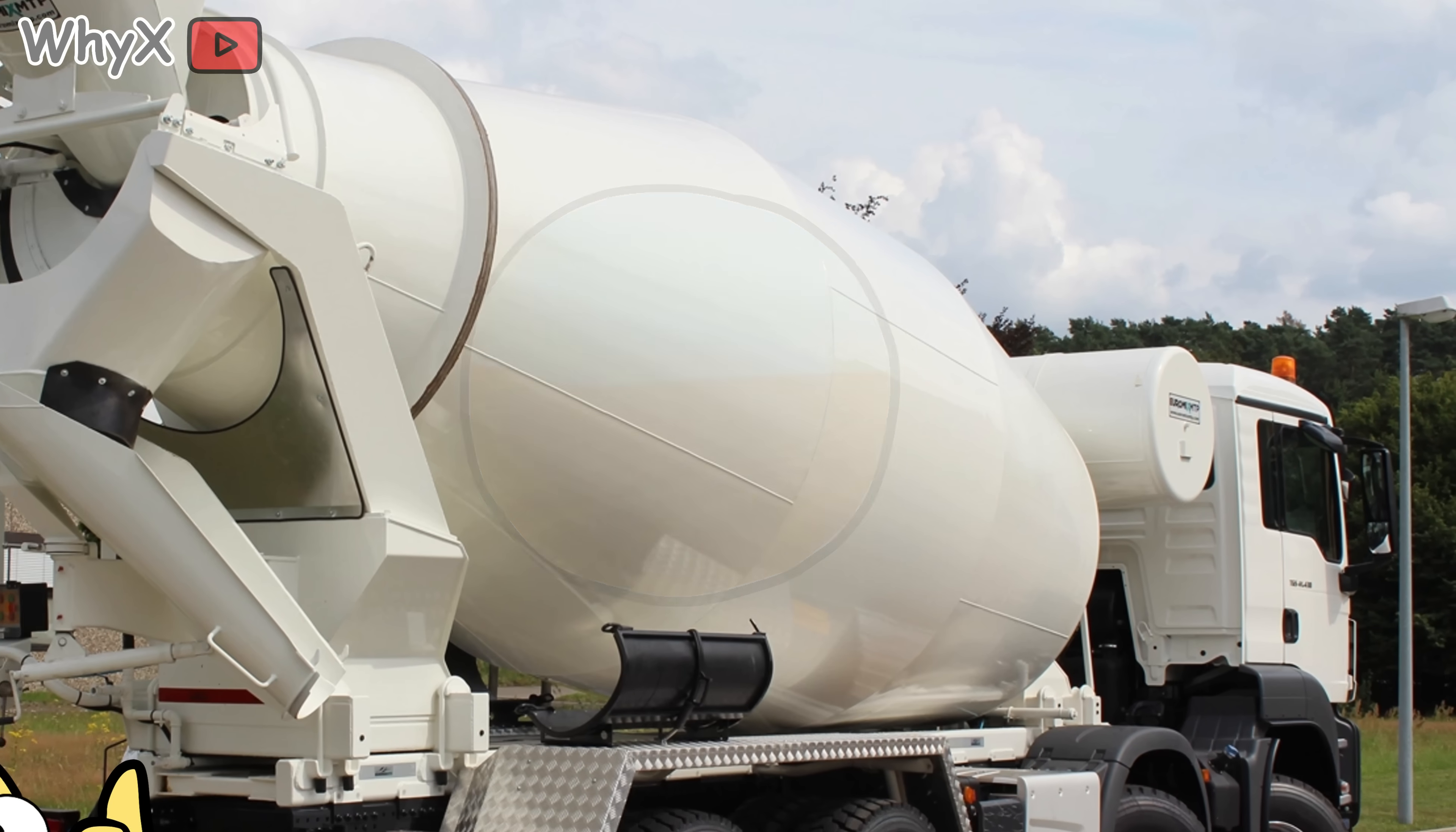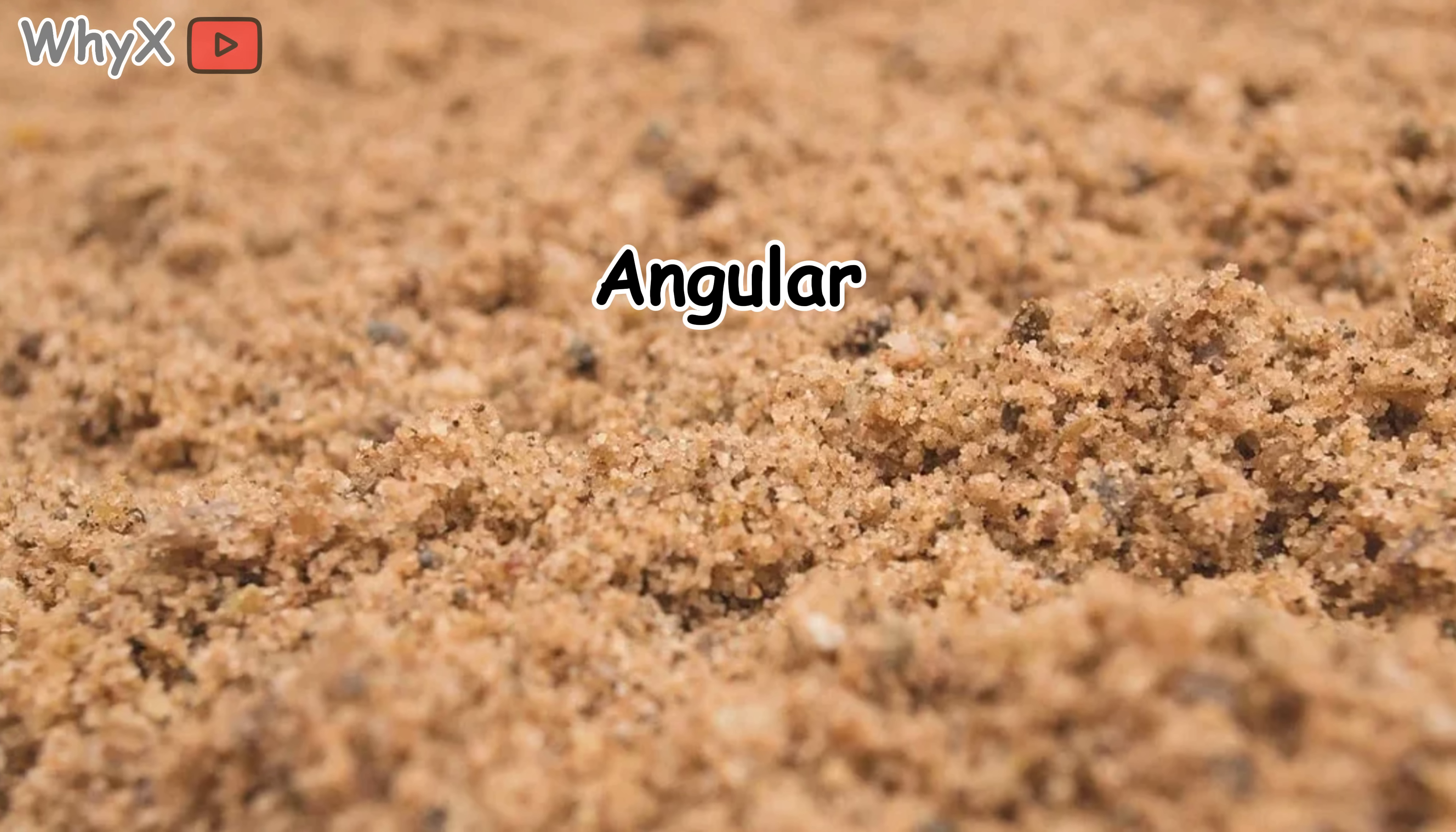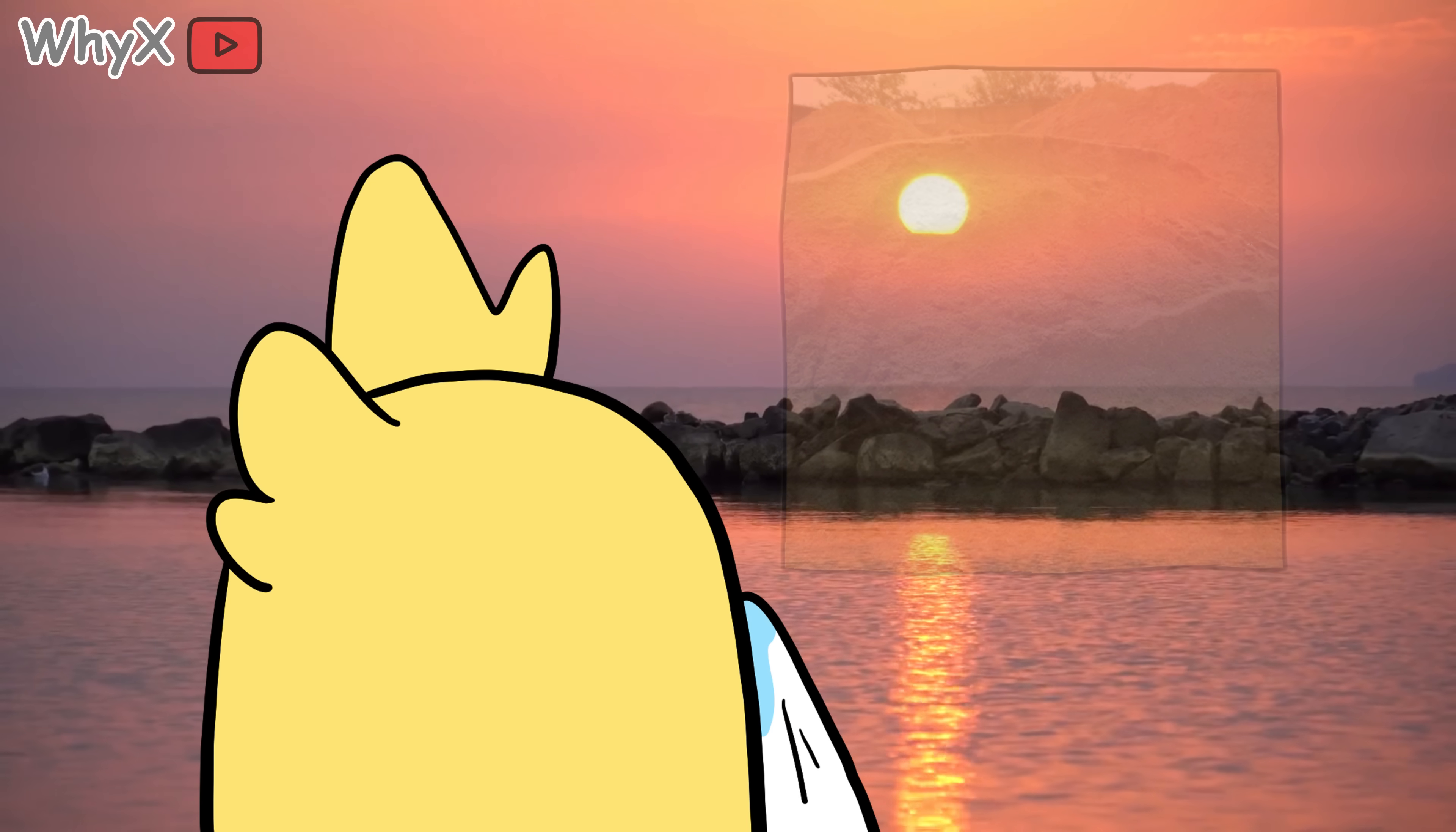If you try to make concrete from desert sand, it is like trying to build a house out of marbles. The kind of sand the world actually needs is angular, coarse and gritty, the kind found at the bottom of rivers, lakes, and beaches. It is sharp enough to lock together when mixed with cement and water. And that kind of sand, we are running out of it.